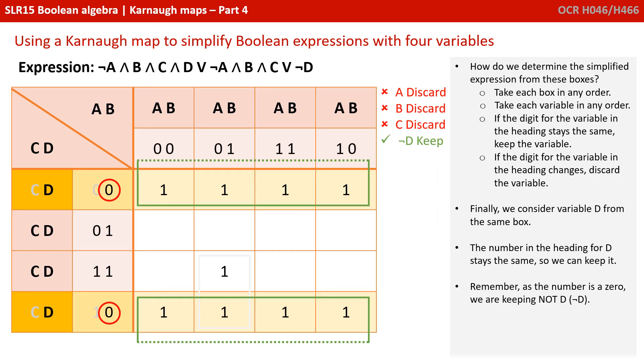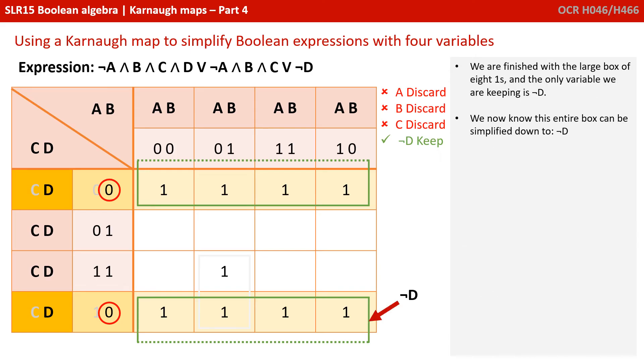And finally, we consider variable D from the same box. Well, this time, the number in the heading for D stays the same. It's a 0 in both cases, so we keep it. Remember, as the value in the heading is a 0, and that's what we're keeping, we're keeping NOT D. We're finished with a large box of 8 ones, and the only variable we're keeping is NOT D, so that entire box is simplified to NOT D.